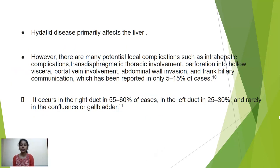Hydatid disease primarily affects the liver. However, there are many potential local complications such as intrahepatic complications, transdiaphragmatic thoracic involvement, perforation into hollow viscera, portal vein involvement, abdominal wall invasion, and frank biliary communication, which has been reported in only 5–15% of cases. Biliary communication can occur in the right duct in 55–60% of cases, in the left duct in 25–30%, and rarely at the confluence.